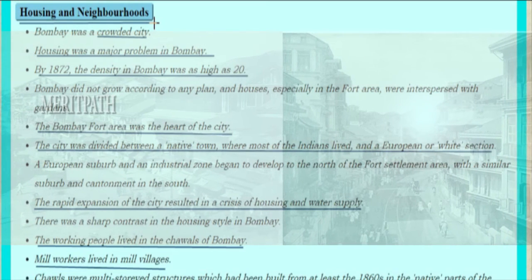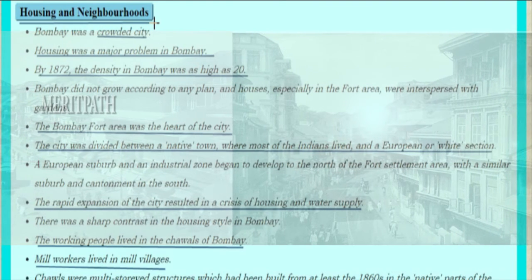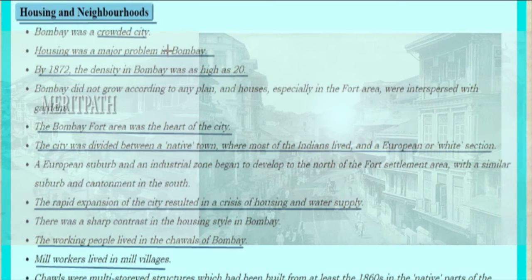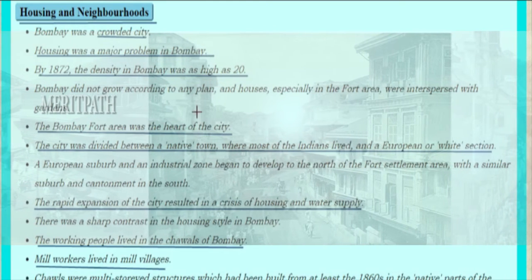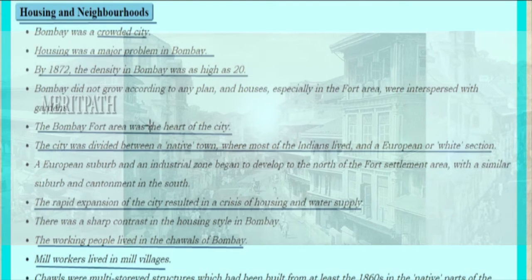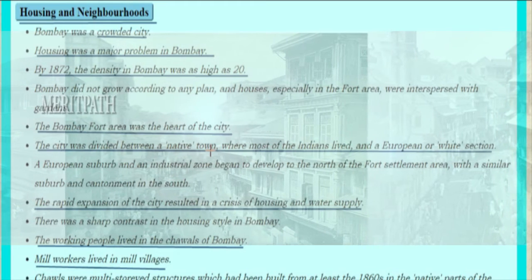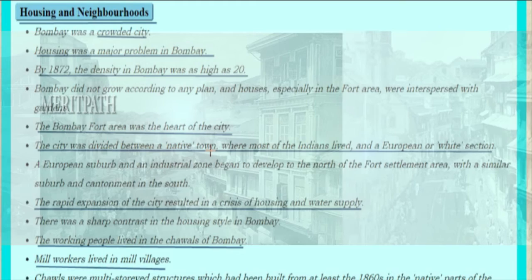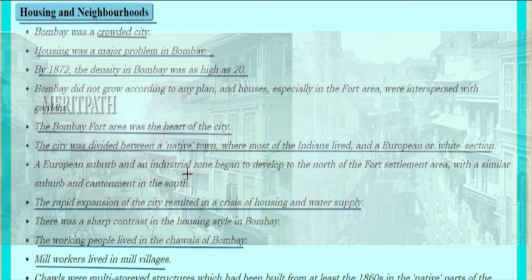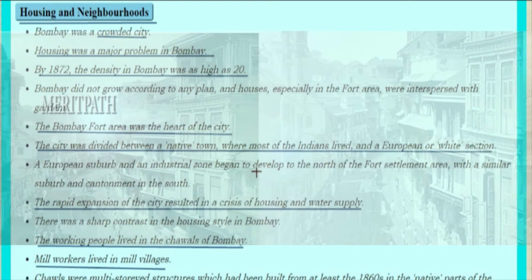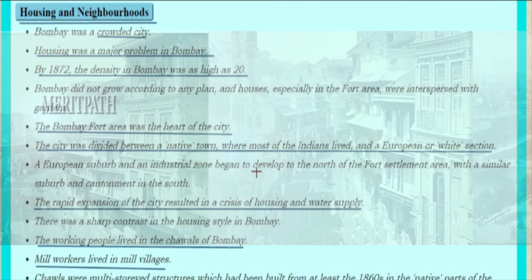Bombay was a crowded city and housing was a major problem. By 1872, the density in Bombay was very high. Bombay did not grow according to any plan, and houses, especially in the fort area, were interspersed with gardens. The Bombay fort area was the heart of the city. The city was divided between a native town, where most Indians lived, and a European or white section. A European suburb and an industrial zone began to develop to the north of the fort settlement area, with a similar suburb and cantonment in the south.